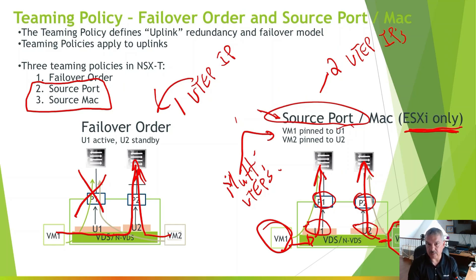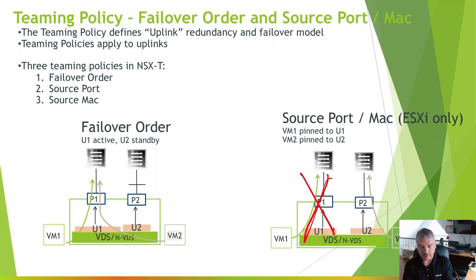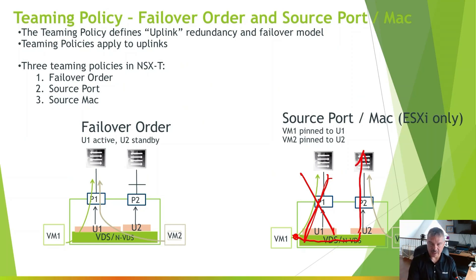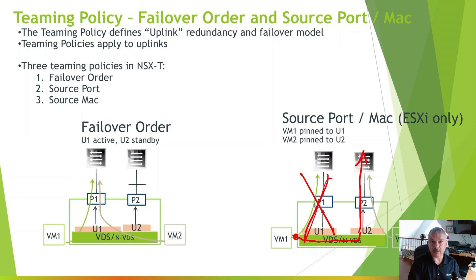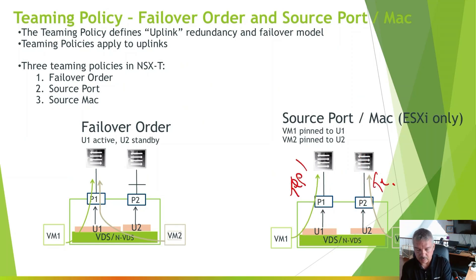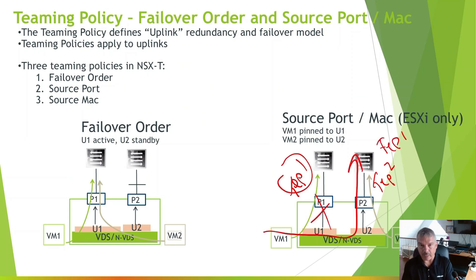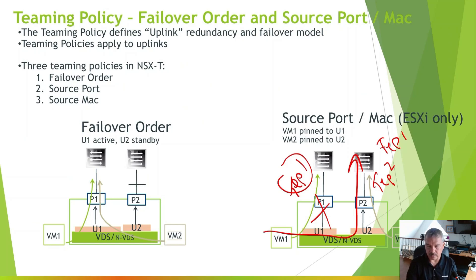With source port teaming and two uplinks, you have two VTEP IPs — one for each uplink. If you had four uplinks, you'd have four VTEP IPs, so you're consuming more IPs with this solution. If uplink 1 fails, the TEP that VM1 was mapped to fails over to uplink 2. We don't remap VM1 to a new TEP — that would require updating a whole bunch of tables and create extra overhead. Instead, we fail the TEP itself over, so TEP 1 moves to uplink 2 and the VM follows it. We'll look at the tables in detail in a future switching video.